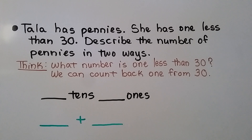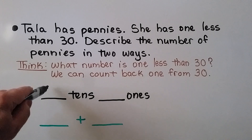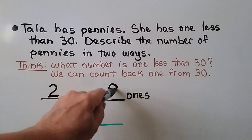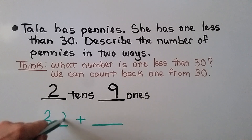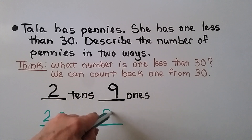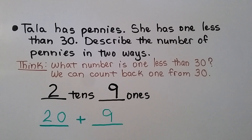Tala has pennies. She has one less than thirty. We need to describe the number of pennies in two ways. What number is one less than thirty? We count back one from thirty — twenty-nine. Twenty-nine is two tens and nine ones. In expanded form: two tens is twenty, nine ones is nine. So we've described twenty-nine as two tens and nine ones, and as twenty plus nine in expanded form.